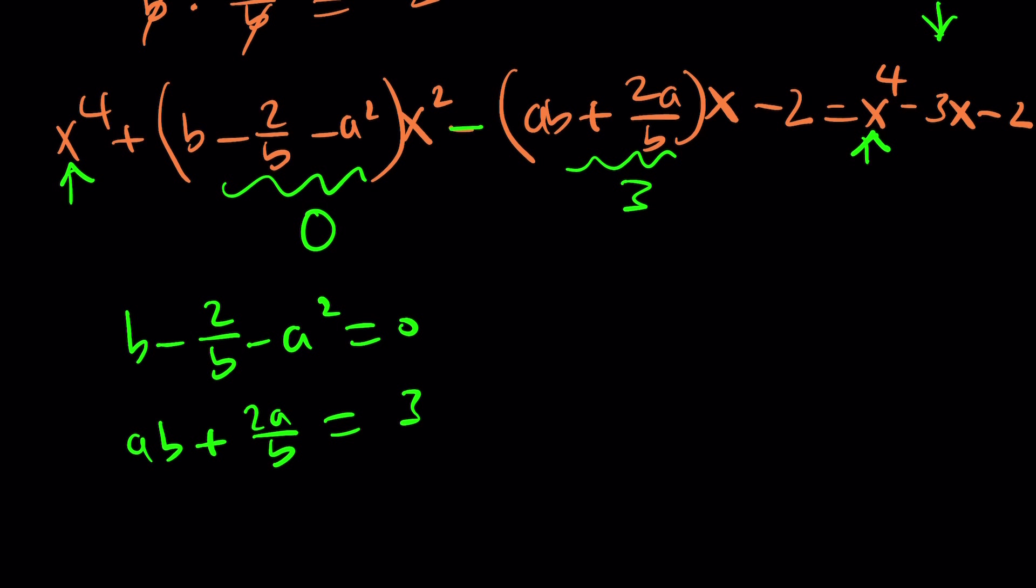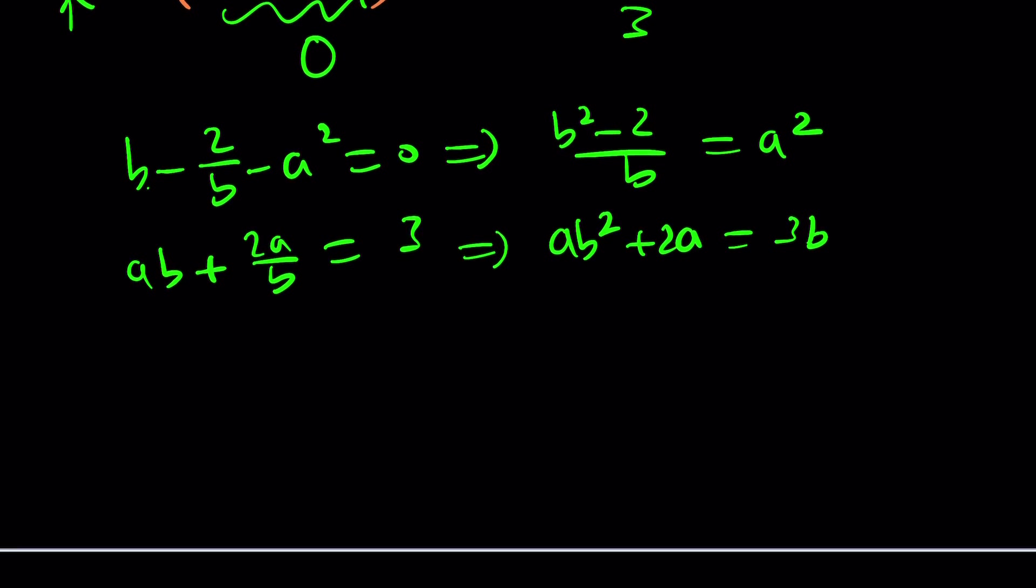Let's go ahead and write it down. b minus 2 over b minus a squared is equal to 0. And ab plus 2a over b is equal to 3. This is a system of equations. How do you solve it? That's a good question. It's actually a million-dollar question. But one thing you can do is make a common denominator. b squared minus 2 divided by b is equal to a squared. And from the second one, you can make a common denominator and cross-multiply. And then factor out an a and isolate.